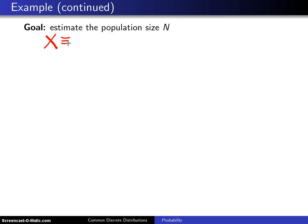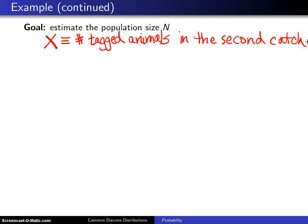So first of all, what will X be, the random variable X that's going to have the hypergeometric distribution? Well, that will be the number of tagged animals that are captured in the second catch, and since sampling is again without replacement, this will have the hypergeometric distribution.